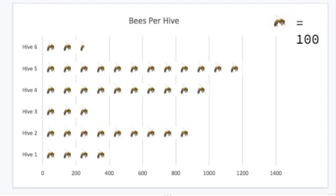Let's have a look then at hive 3. How many bees does hive 3 have? 100, 200, 300. 300 bees.